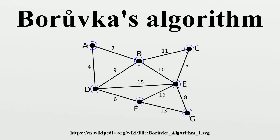Borůvka's algorithm is an algorithm for finding a minimum spanning tree in a graph for which all edge weights are distinct. It was first published in 1926 by Otakar Borůvka as a method of constructing an efficient electricity network for Moravia.